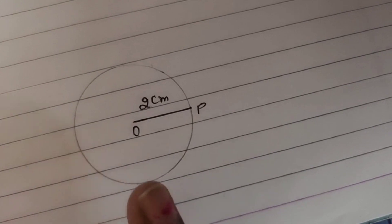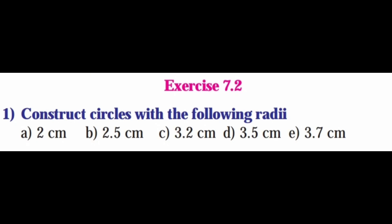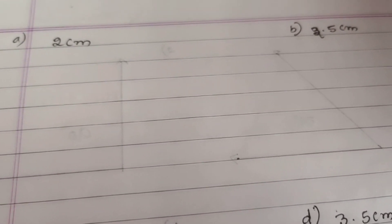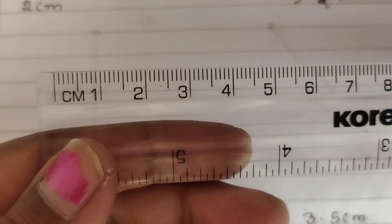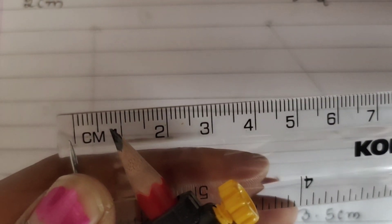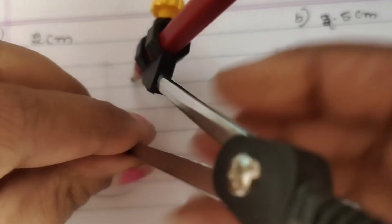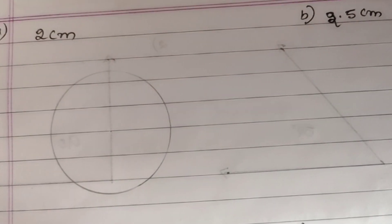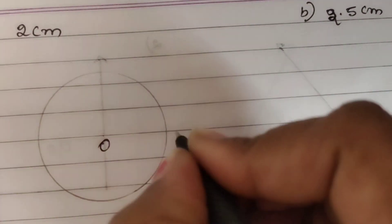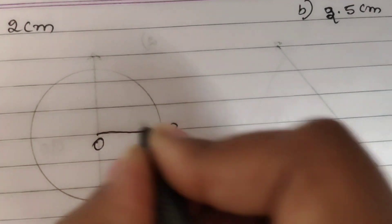Let's see exercise 7.2. First question: construct circles with the following radii. First one is 2 cm, so use compass and scale and construct the circle with 2 cm radius.